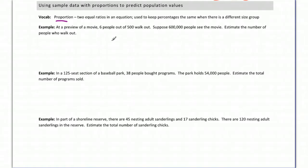So example: at a preview of a movie, 6 out of 500 walk out. So the number of people that walk out is on top and the number of people total, 500, I put on bottom. So I put the number of people who walk over the total.